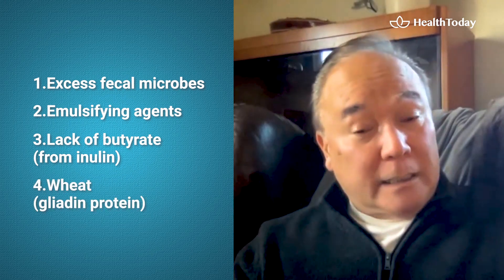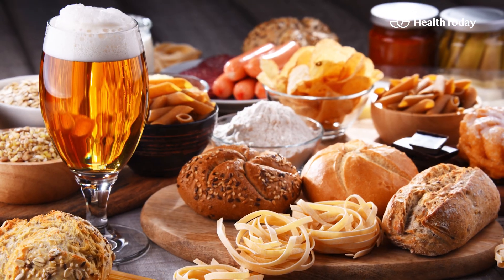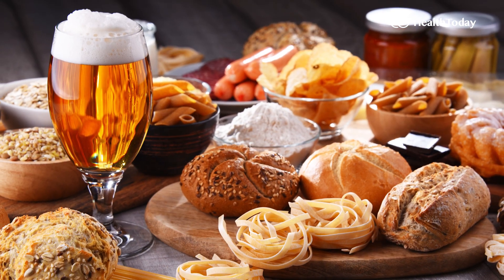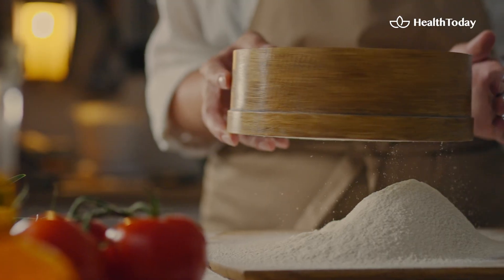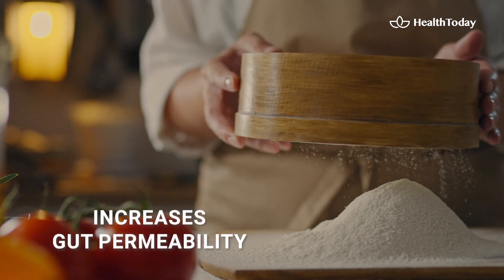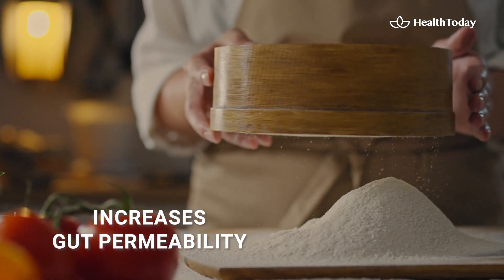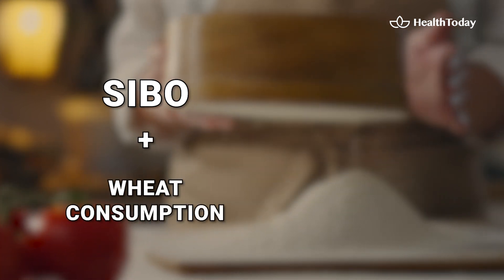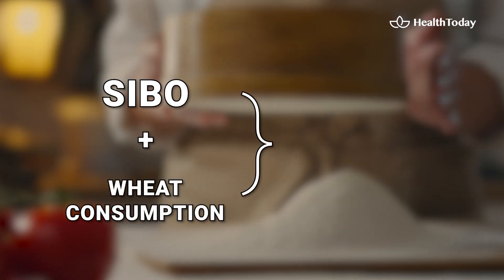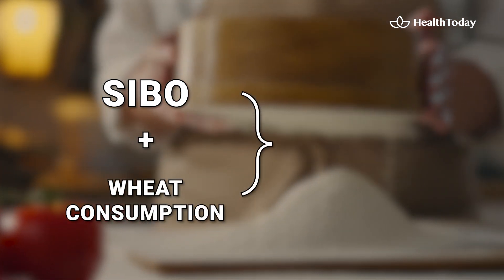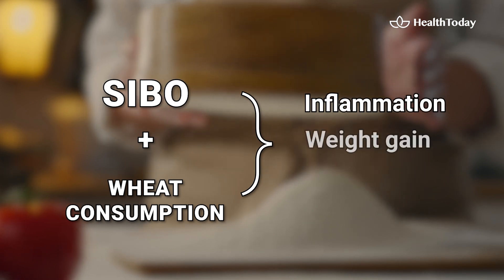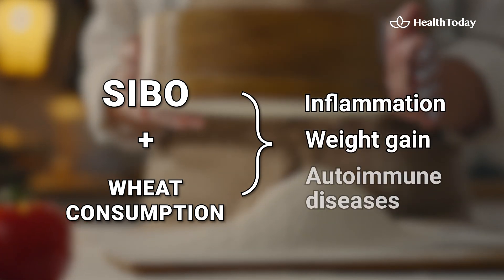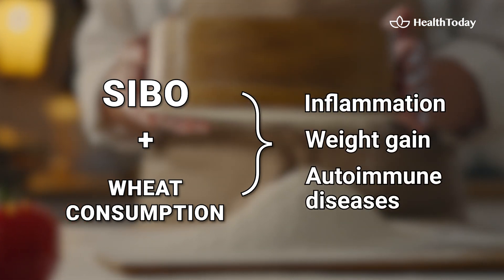And wheat — the gliadin protein of wheat, with good science, we know increases gut permeability. Combined SIBO with wheat consumption, that's a lethal combination that leads to inflammation, weight gain, autoimmune diseases, etc.